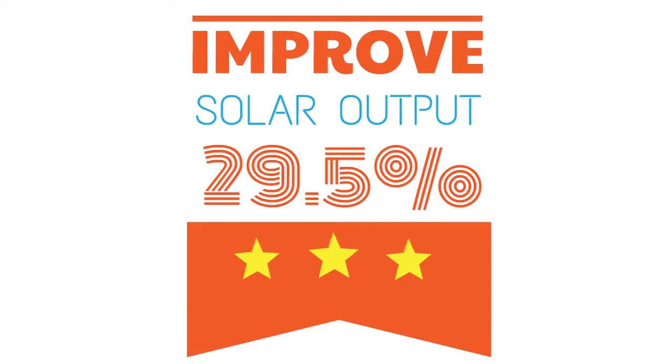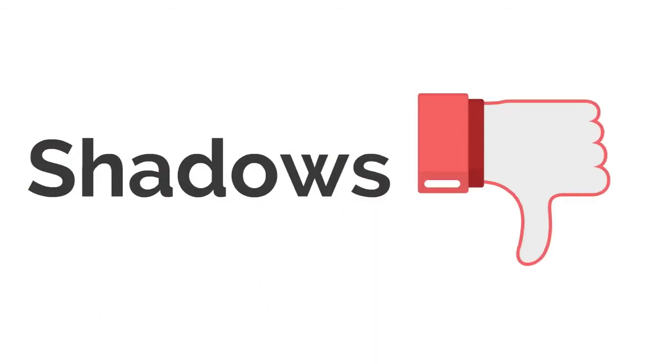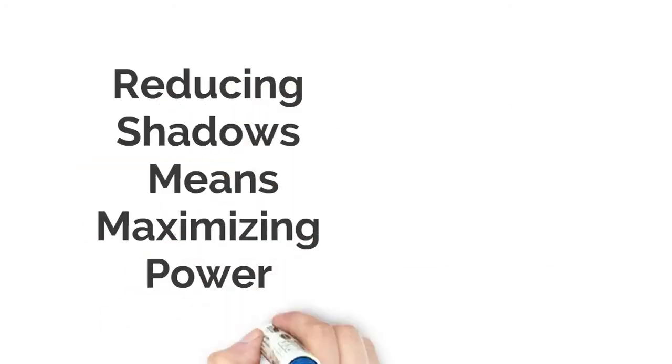Next is Hyperstealth's Eclipse technology. Did you know that minor shadows can reduce solar panel output by more than 90 percent? The Eclipse has a capability to reduce these shadows to maximize the power a panel can create.